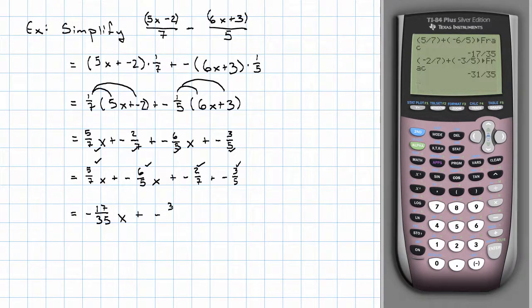And I can just leave it there, or if I prefer, I can write negative 17 over 35 x minus 31 over 35.